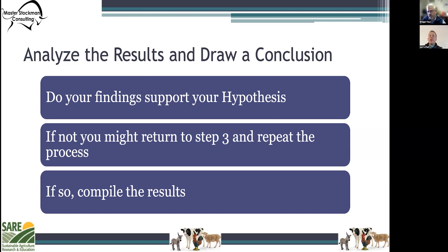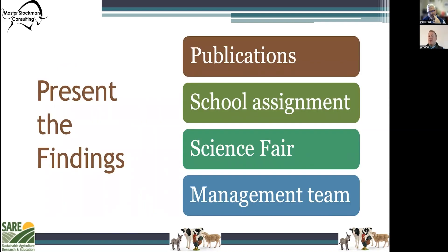If your hypothesis was supported by the experiment, we'll go on to the final step in the scientific process. This final step — step seven — is to present the findings. Depending on your situation, this step might include an assignment you turn in, or sharing the results with your management team or the owners of an ag operation. And if this has been done in college, especially in graduate school, this final step might even include submitting your findings to a scientific journal to be peer reviewed and published so that others can read them and benefit from your experiment.